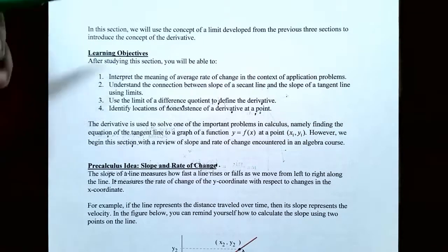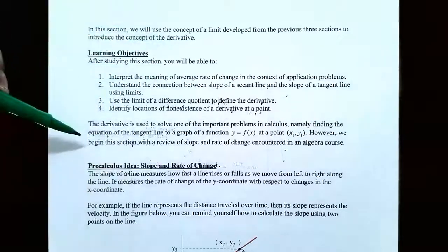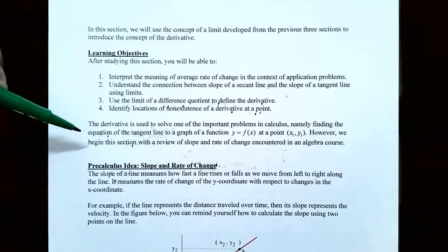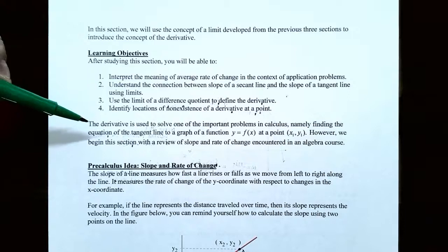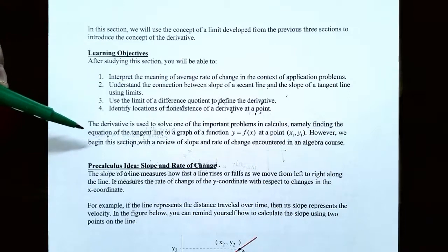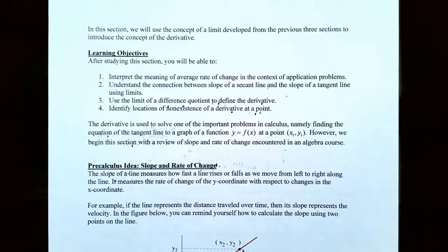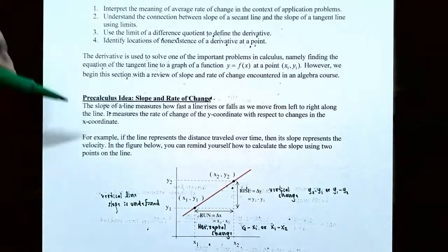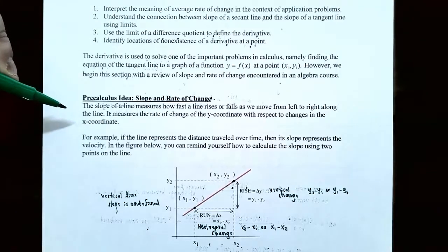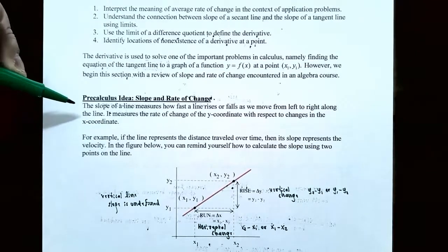The tangent line problem is namely to find the equation of a tangent line to the graph of a function y equals f of x at a point that touches the tangent line and is also on the graph. We're going to start with a review of slope and average rate of change that you may have encountered in a college algebra course — a pre-calculus idea of slope and average rate of change.